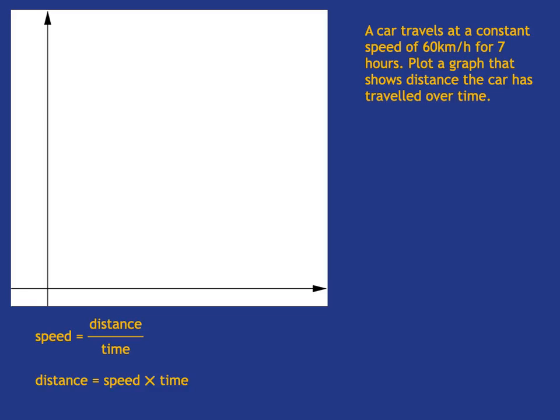And we've been told our speed is 60. So the formula here is going to be distance is 60 multiplied by time. Now we want to plot the graph. Before we plot the graph, we need to decide what goes on what axis.